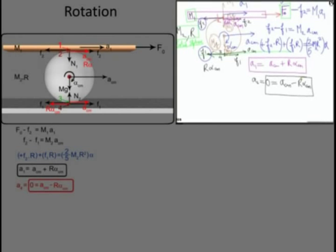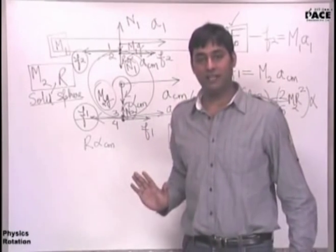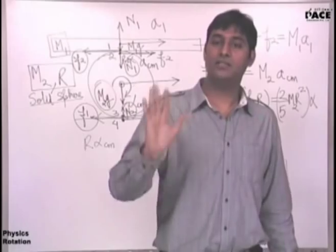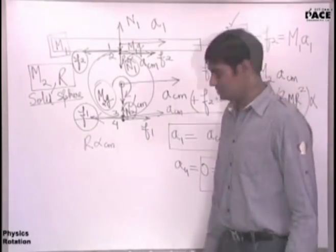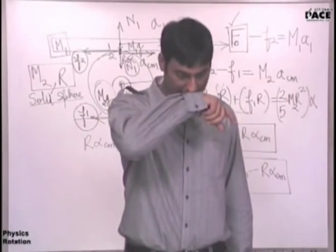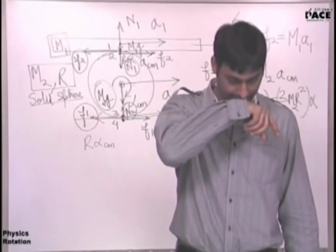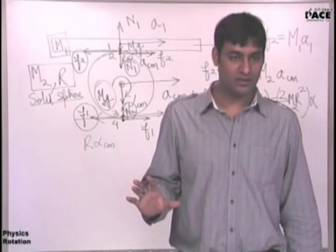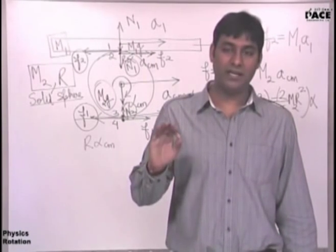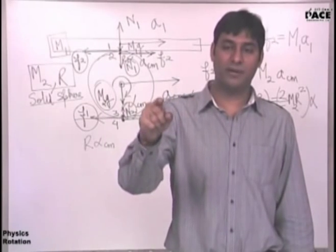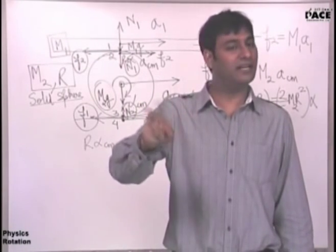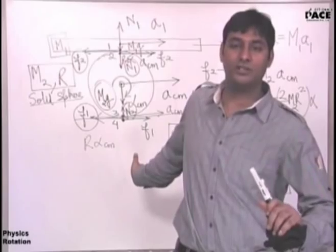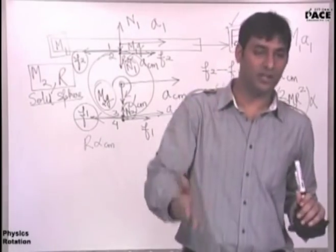Now we have five equations and five unknowns and we can solve them. The concept is clear. Let me give you some questions and see how fast you solve them. Just write the equations. The answers are on the board — after class, verify them. Let's utilize class time effectively by moving on and learning the concept rather than solving trivially on the board.